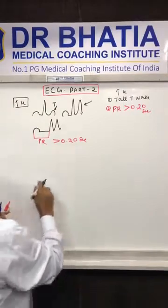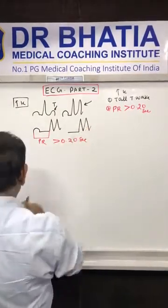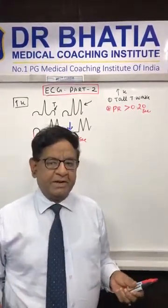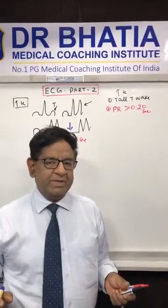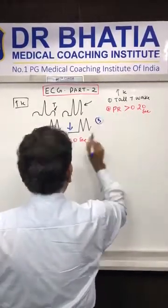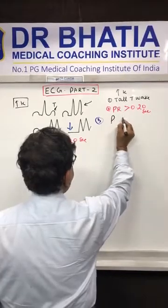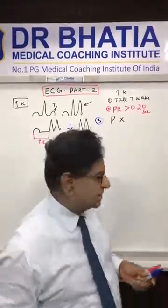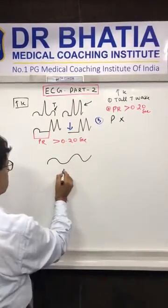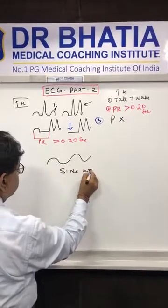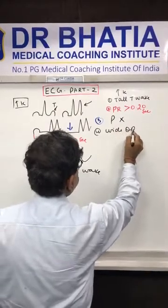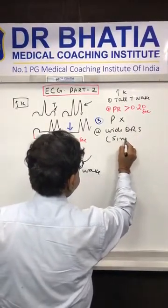After that, the P wave disappears, and this is known as atrial arrest. As you know, the P wave is produced due to atrial contraction. So the third finding is P wave disappears, so-called atrial arrest. Finally, there is wide QRS, so-called sine wave pattern.